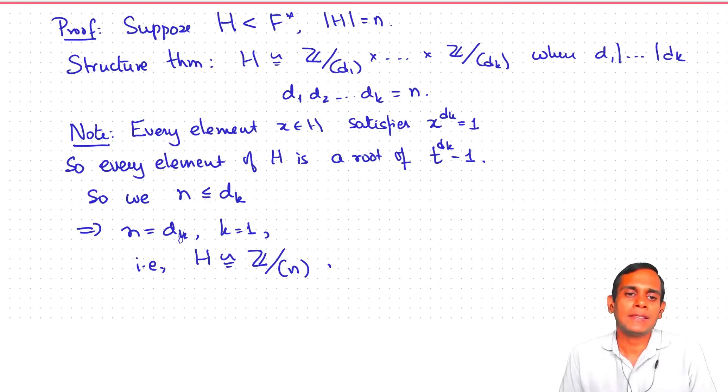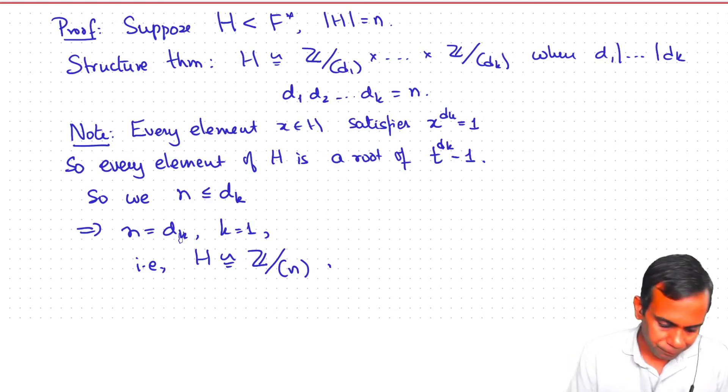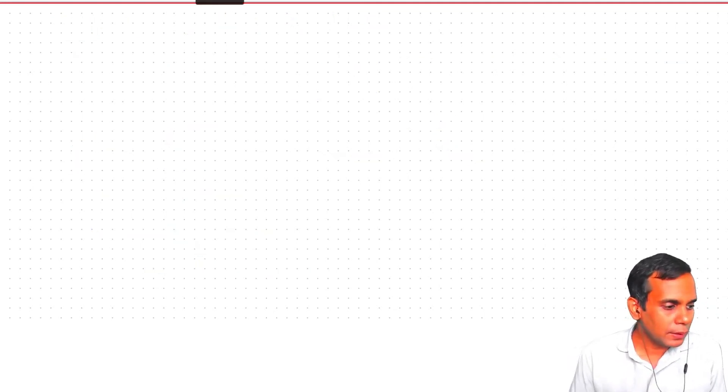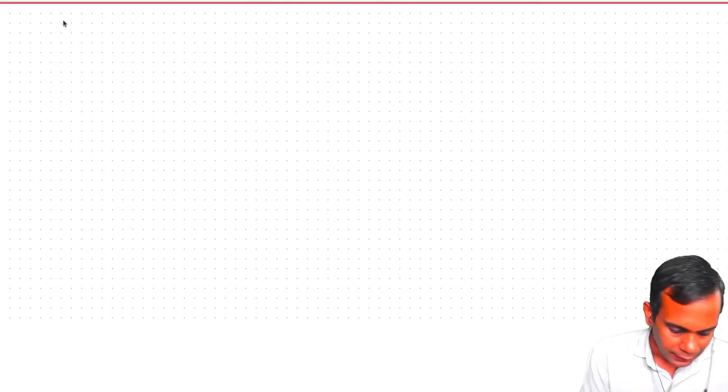So that concludes the proof of the theorem. Every finite subgroup of the multiplicative group of any field is cyclic. In fact, if it is of order n, it is isomorphic to Z mod n. Now let us look at finite fields, the multiplicative group of finite field.